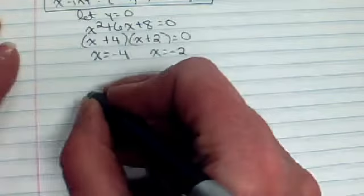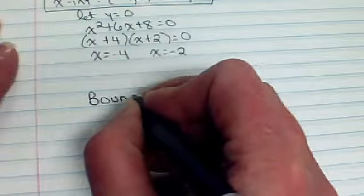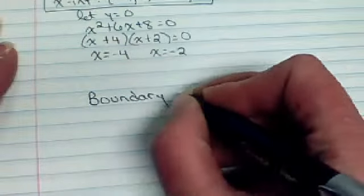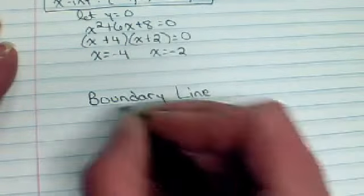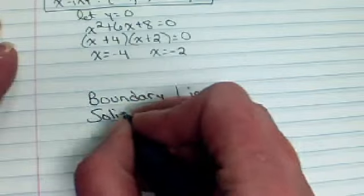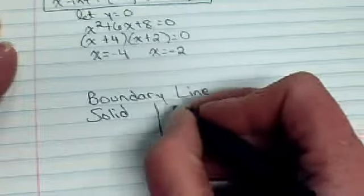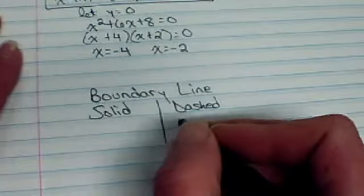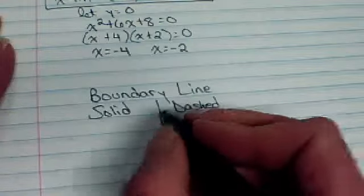When you have an inequality, your boundary line is either going to be a solid line or a dashed or dotted line. So let's think about when it's going to be a solid line and when it would be a dashed line. Well, a solid line would mean that we're including that boundary line as part of our solution set. So the symbol that means we're going to include something would be that it was or equal to.